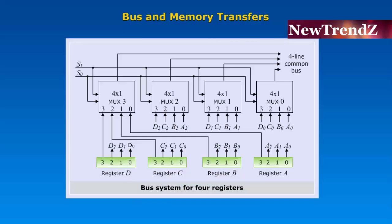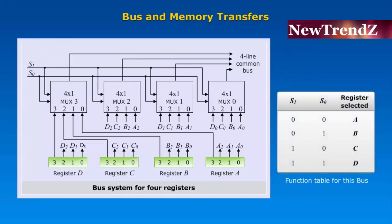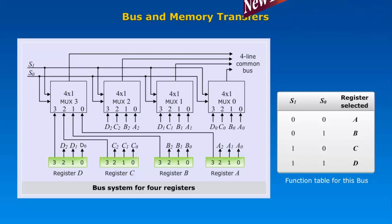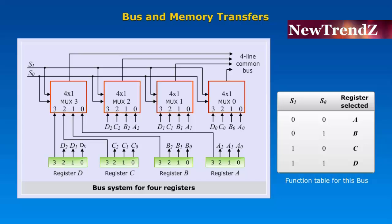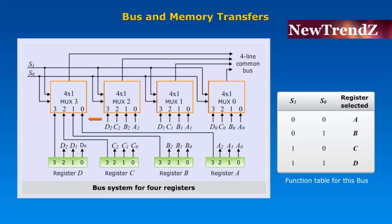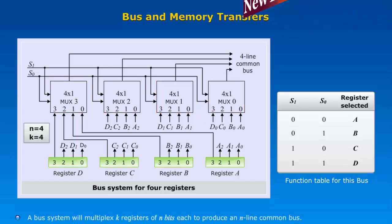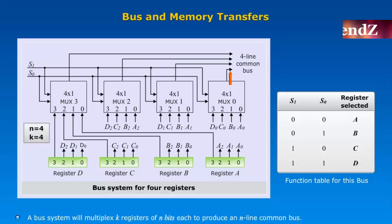One way of constructing a common bus system is with multiplexers. The multiplexers select the source register whose binary information is then placed on the bus. Each register has 4 bits numbered 0 through 3. The bus consists of four 4x1 multiplexers, each having 4 data inputs 0 through 3 and 2 selection inputs S1 and S0. A bus system will multiplex K registers of N bits each to produce an N-line common bus.